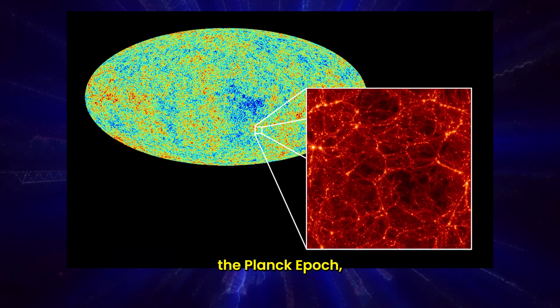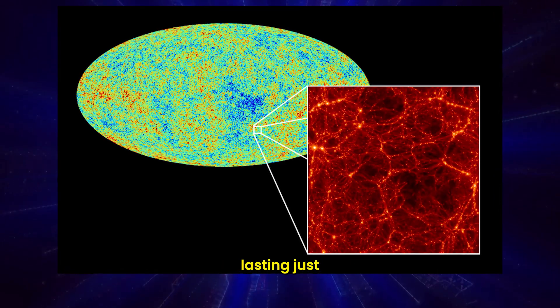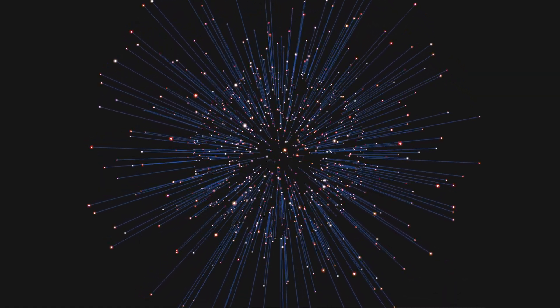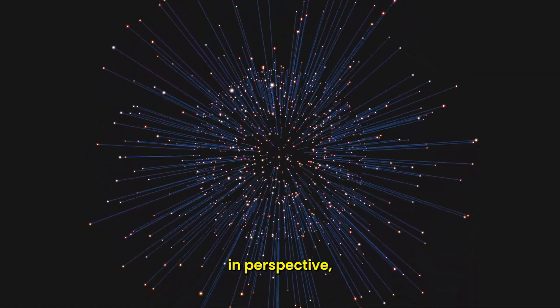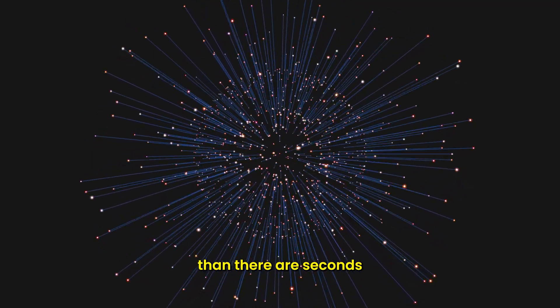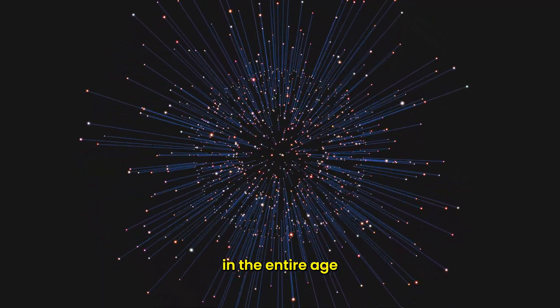It's called the Planck epoch, a sliver of a moment lasting just 10 to the minus 43 seconds. To put that in perspective, there are more Planck moments in a single second than there are seconds in the entire age of the universe.